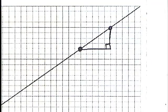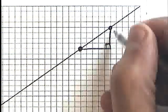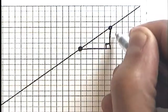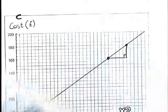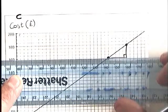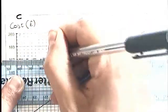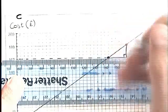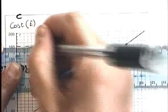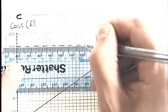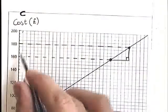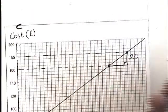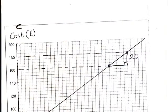Many people would be really tempted to just write four here because they're looking at the squares and they say there's four squares up. But actually, you need to be a little bit more cunning than that. You need to look at what that means on the scale. So I'm going to draw these dotted lines in so that I can see really clearly on the scale how far up it is between those two points. The lower point is at 160 and the upper point is at 180. That's a distance of 20, or a cost difference of 20 between those two points.